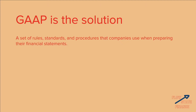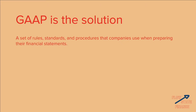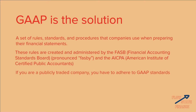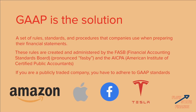GAAP is a set of rules, standards, and procedures that companies use when preparing their financial statements. These rules are created and administered by the FASB, or the Financial Accounting Standards Board, and the AICPA, the American Institute of Certified Public Accountants. Basically, if you are a publicly traded company, you have to adhere to GAAP standards — so companies like Amazon, Apple, Facebook, and Tesla must all do their accounting by these standards.